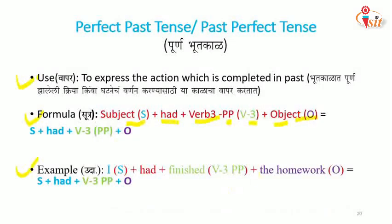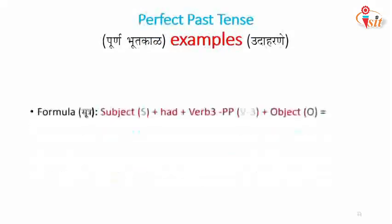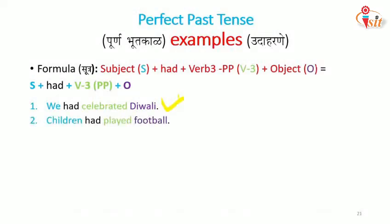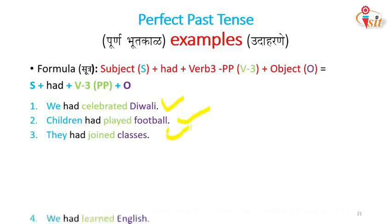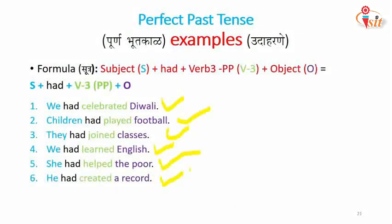Let's see the example: 'I had finished the homework.' Very simple. More examples of past perfect tense: We had celebrated Diwali. Children had played football. They had joined classes. We had learnt English. She had helped the poor. He had created a record. Sachin had scored a hundred.